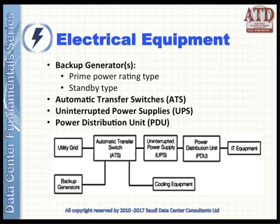Electrical equipment covers all power-related devices. First, the backup generator — which can be prime power providing an unlimited number of hours, or the standby type which has a limitation on hours throughout the year. Second, the ATS, used to transfer the load in case of city power failure. Third, the UPS, used to feed the data center with power when city power goes out. Finally, PDUs, which supply power to IT equipment.